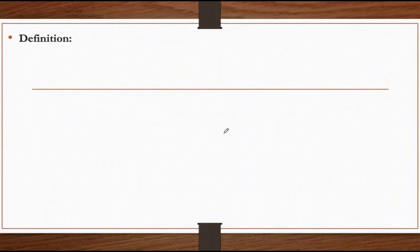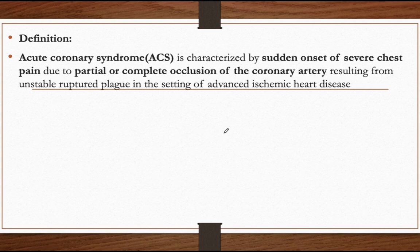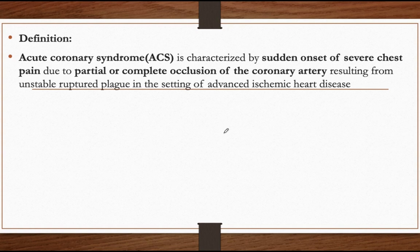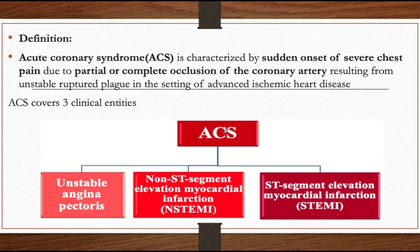Acute coronary syndrome is defined as any condition that obstructs the coronary arteries and reduces blood flow to the heart. It is characterized by sudden onset of severe chest pain due to partial or complete occlusion of a coronary artery in the setting of advanced ischemia. There are three clinical entities: unstable angina, non-ST-segment elevation myocardial infarction (NSTEMI), and ST-elevation myocardial infarction (STEMI).